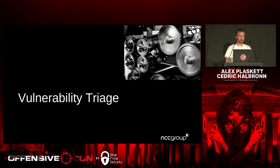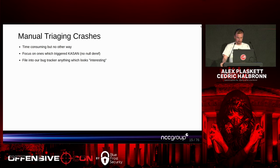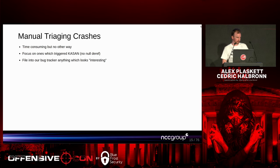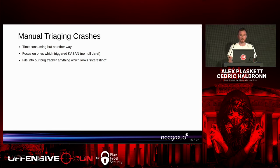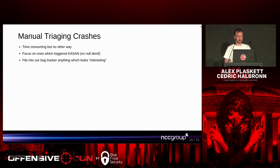Now talking about vulnerability triage and what we actually found. To triage fuzzed vulnerabilities it's quite time-consuming — we didn't really have an automated way of doing it. On Windows you have things like !exploitable that gives you an indication, but we were basically relying on our experience and knowledge of what could be an interesting crash, focusing on things which triggered KASAN, issues very likely to be memory safety violations. We filed these bugs into a bug tracker so we could go back and investigate in more detail later.